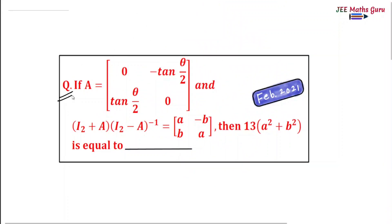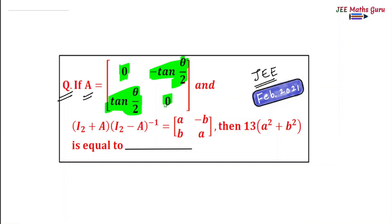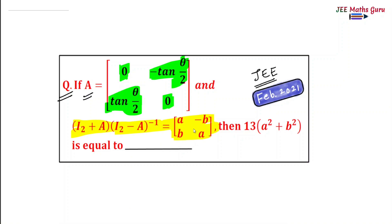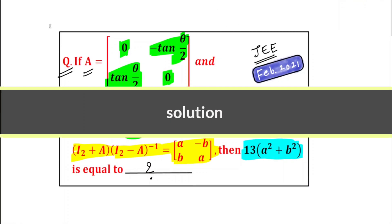Hello students. See this PYQ of the topic matrix — JEE 2021, question is numerical type. This is the matrix A and we have to find the value of 13 times A² + B². This is a very nice question, PYQ of JEE 2021.